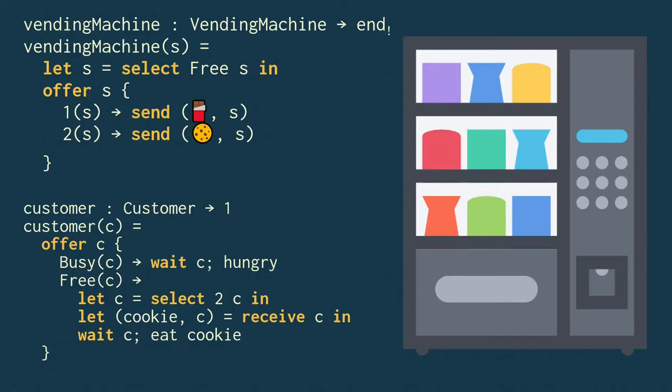Now, let's have a look at a GV program. So the vending machine function takes a channel endpoint of type vending machine, selects the free branch, and then offers the two branches, one and two. Each S endpoint must be used precisely once in order to guarantee safety.